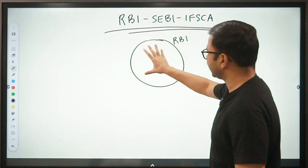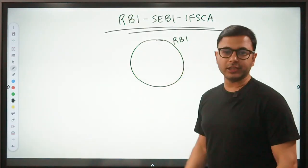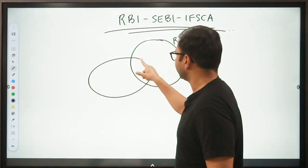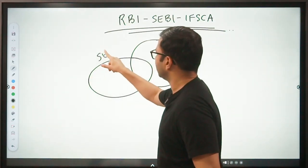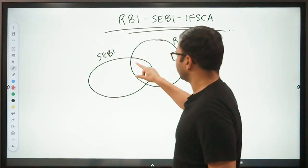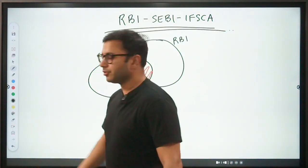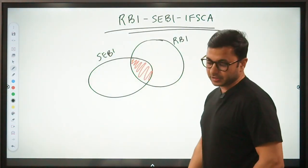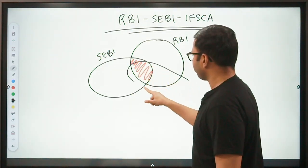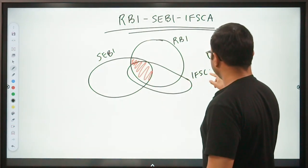Let's assume that this is the syllabus of RBI. To prepare for RBI, you have to cover everything inside this circle. If we draw SEBI's diagram, let's say SEBI is something like this. Some subjects are overlapping with RBI syllabus, but there are a lot of important subjects which are not overlapping with RBI syllabus. So this is the second circle that we have.